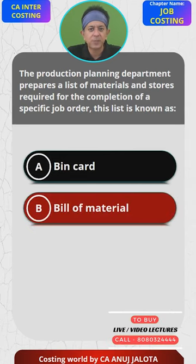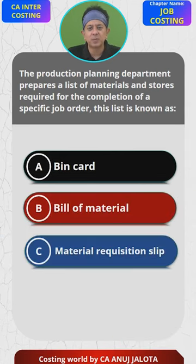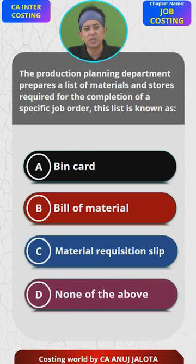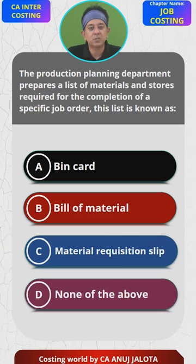The four options are: A — bin card, B — bill of material, C — material requisition slip, and D — none of the above. Think of the correct answer and type it in the comments. Please pause the video right now.